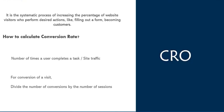Conversion rate optimization takes place after the visitor makes it to your website. This is different from conversion optimization for SEO or paid ads, which focuses on who clicks through your site from organic search results, how many clicks you get, and which keywords are driving traffic.